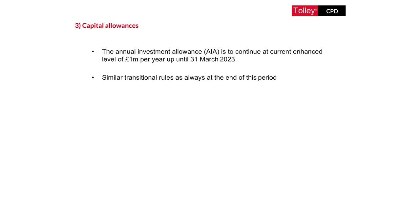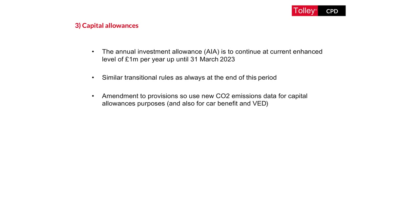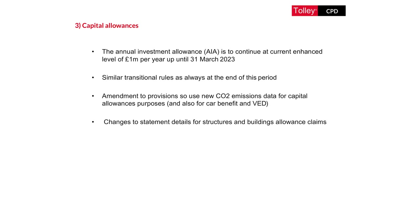There is to be an amendment to the provisions as to how you calculate capital allowances on vehicles. The rate of capital allowances on cars depends on CO2 emissions, and the legislation is being amended to confirm that the CO2 emissions figure to be used is that arising from the Worldwide Harmonized Light Vehicle Test Procedures. Vehicle Excise Duty and company car tax provisions are also being amended to reflect this. This applies for Vehicle Excise Duty for licences taken out on or after the 3rd of November 2021, and for capital allowances and company car tax following Royal Assent of the Finance Bill. There are also changes to the details required when Structures and Buildings Allowance claims are made.